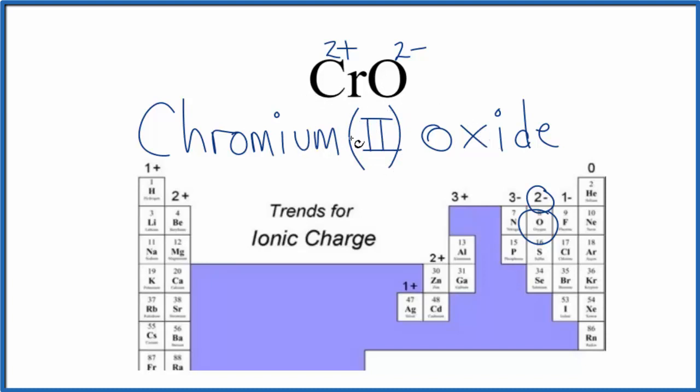So the name for CrO is chromium two oxide. This is Dr. B. And thanks for watching.